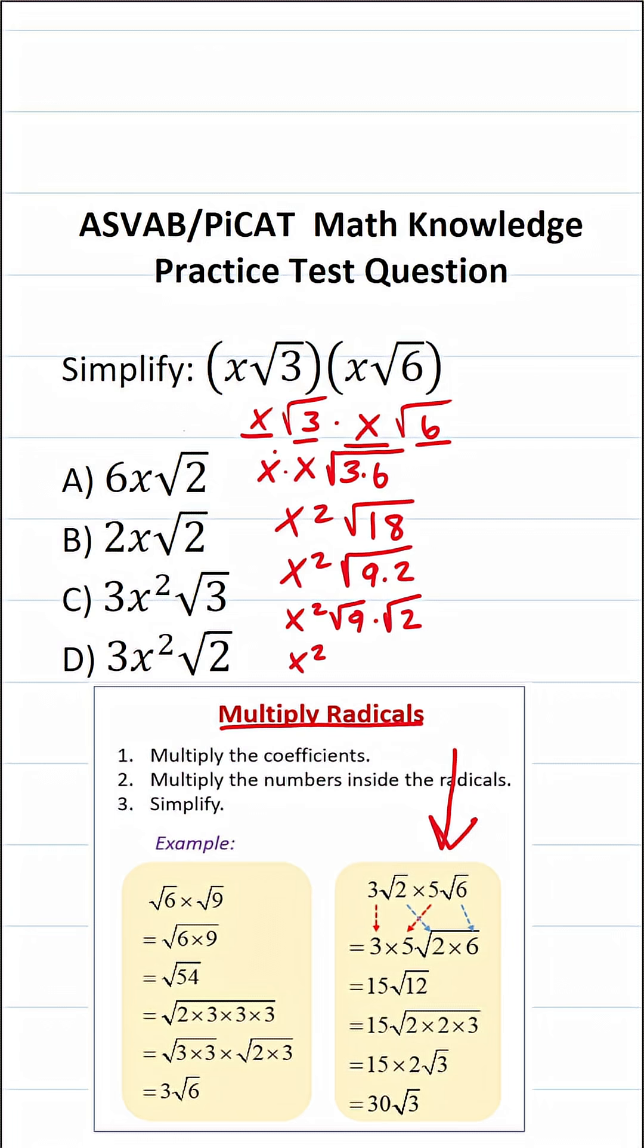This becomes x squared. What is the square root of nine? The square root of nine is three.